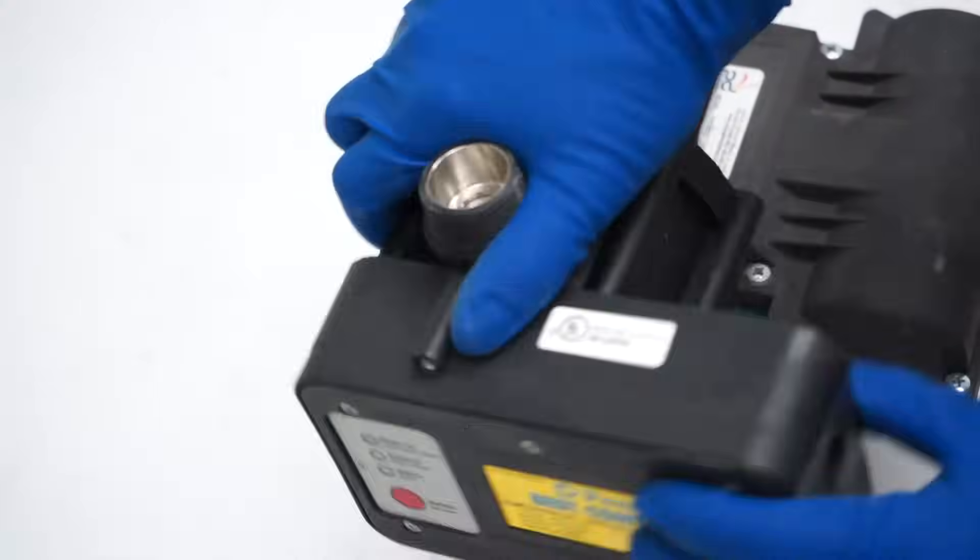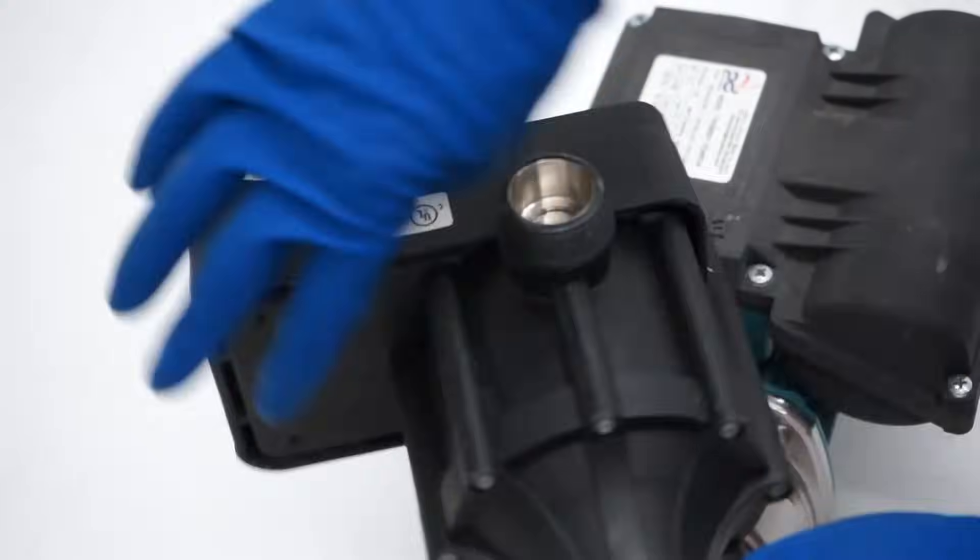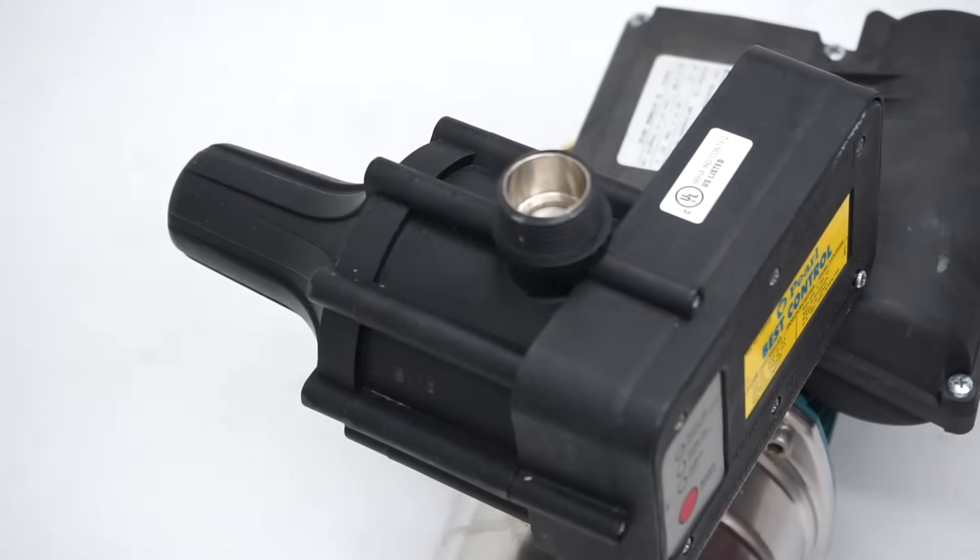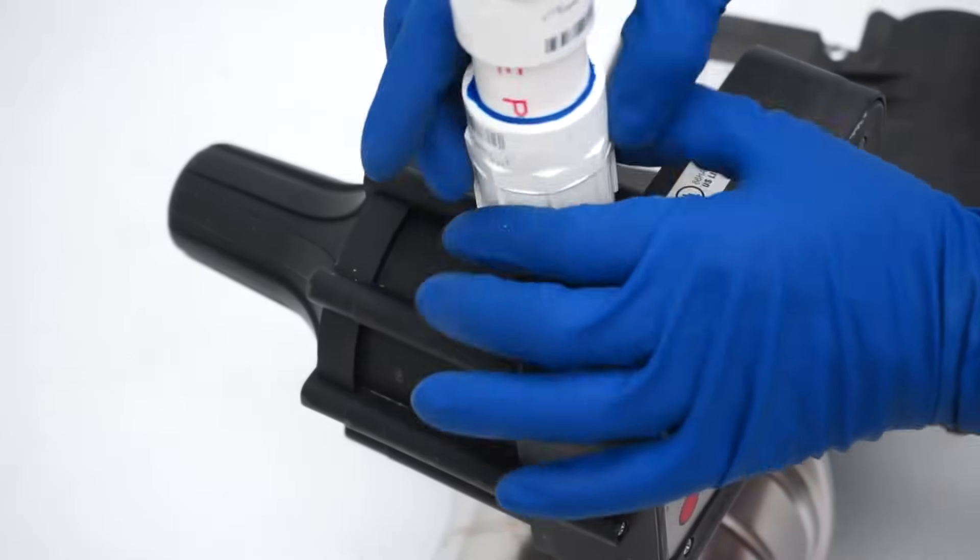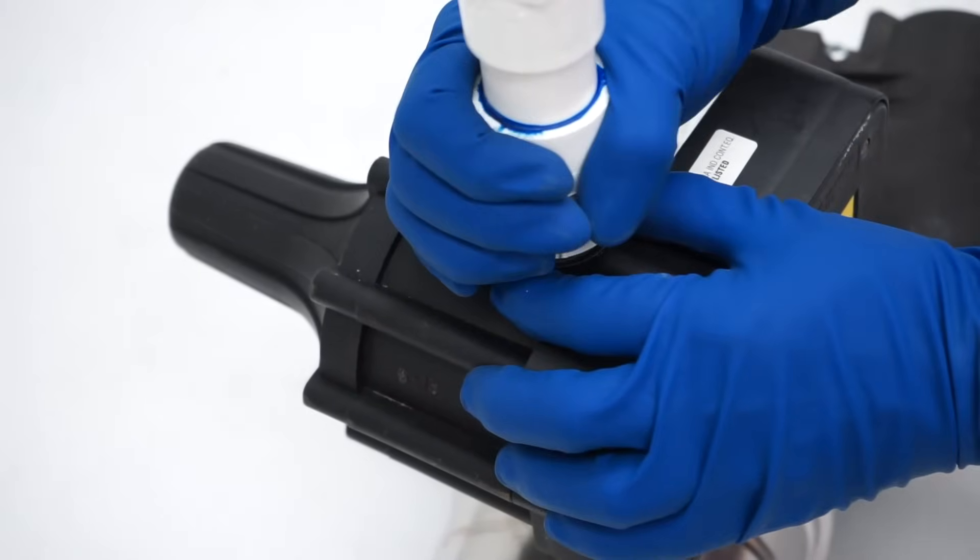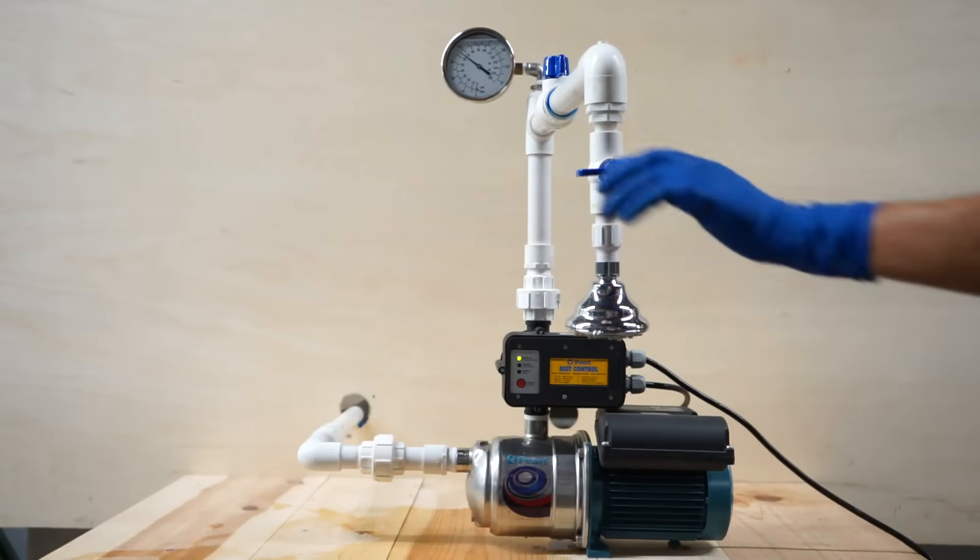Next, reassemble the system. Put the controller back in place, attach the pipes, and test again. If the problem persists, please contact us at 954-474-9090.